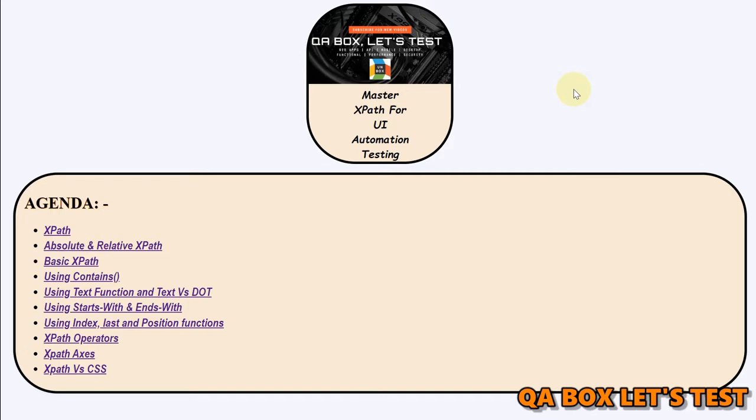Alright, so in this video we are going to do three things. Number one, we are going to use XPath in JavaScript within the web browser to identify control. Number two, we are going to use XPath text function. Number three, we are going to see the difference between using text function and the dot expression.